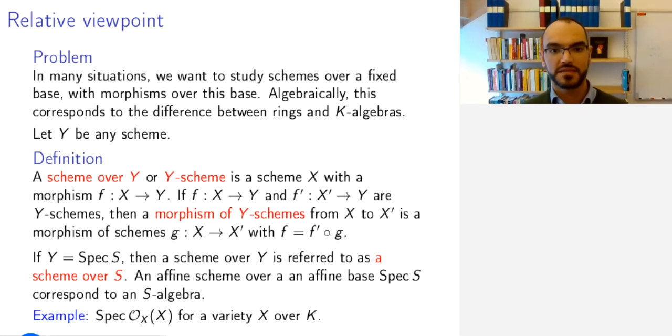So, one example is the scheme associated to an affine variety over K. Then we want to view this as a scheme over spec K. If this is the scheme associated to X, then we want to view this over spec K, rather than absolutely as a scheme.